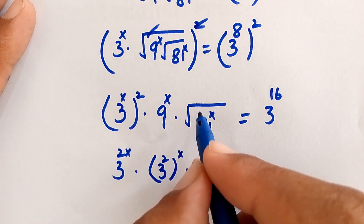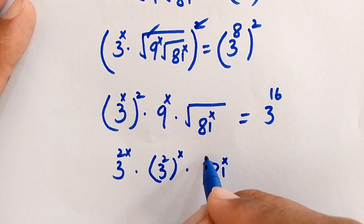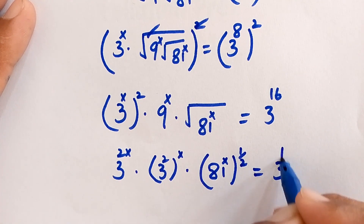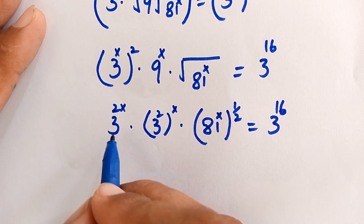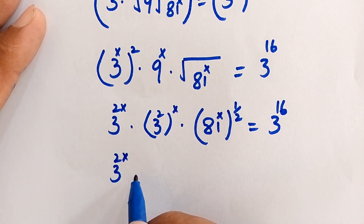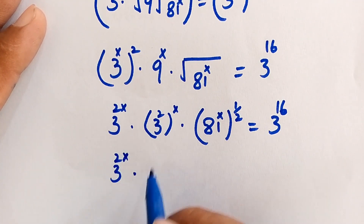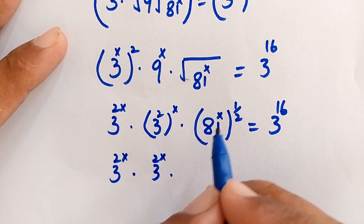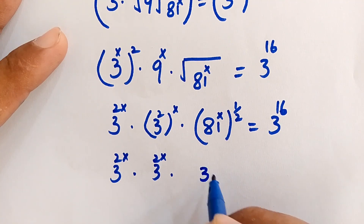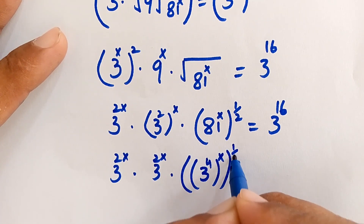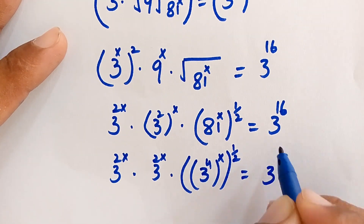The square root equals a power of 1/2, so √(81^x) = 81^(x/2). We also substitute 81 = 3^4, giving (3^4)^(x · 1/2). The right-hand side becomes 3^16, since 8 × 2 = 16.